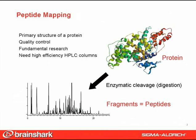HPLC is the predominant tool to characterize the peptide map. HPLC columns used for this purpose must give high efficiency to resolve the potentially thousands of peptides. High efficiency also gives higher signal-to-noise ratio, which permits detection of peptides in low abundance.